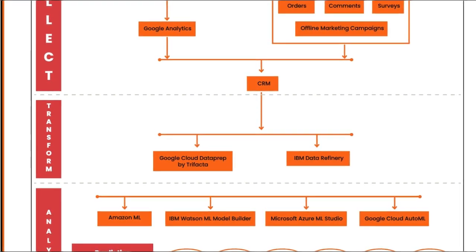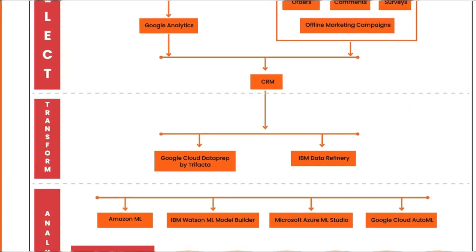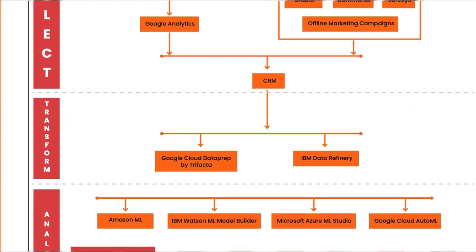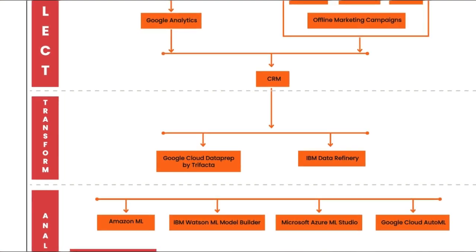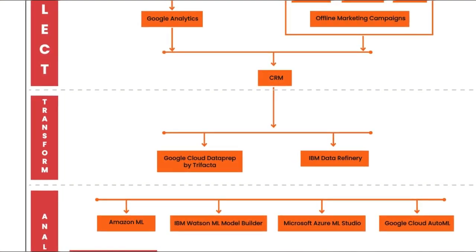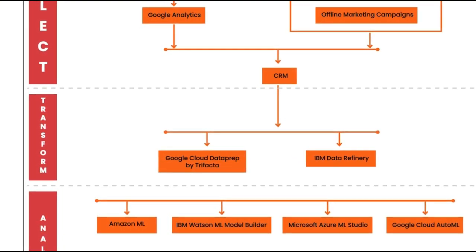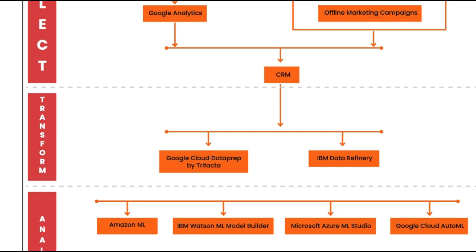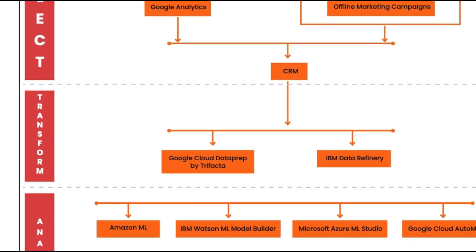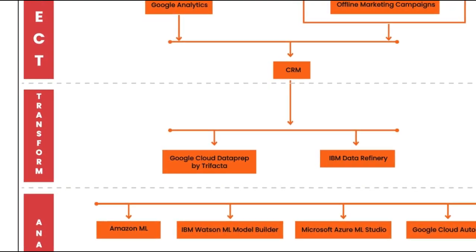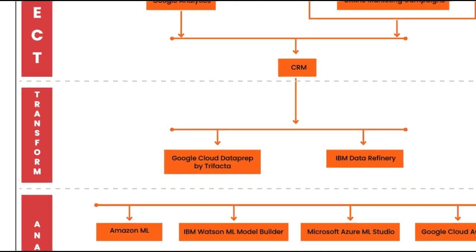The next step in your data science journey is to transform the data for analysis, which includes cleaning and reformatting to provide consistency in big data sets. You want your analysts to be able to clean up data with little to no coding — for example, through a visual tool that can scale and run distributed transformations.